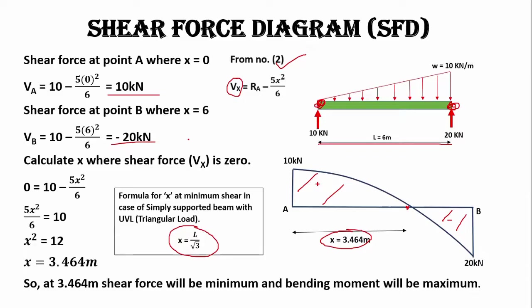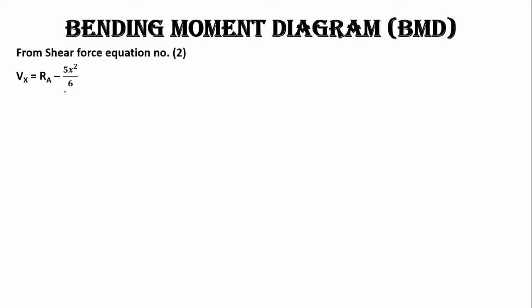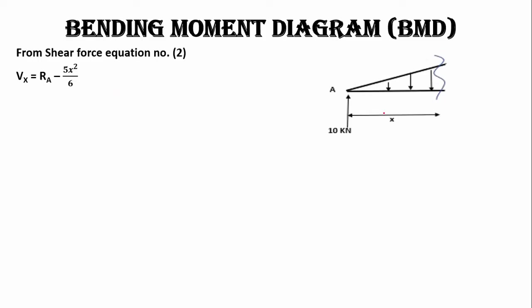Now let's draw the bending moment diagram using the bending moment equation. Starting from the shear force equation RA − 5x²/6, we multiply by the moment arm to get the bending moment equation. At distance x, the reaction RA = 10 kN bends the beam clockwise (positive), and the triangular load bends it anti-clockwise (negative).